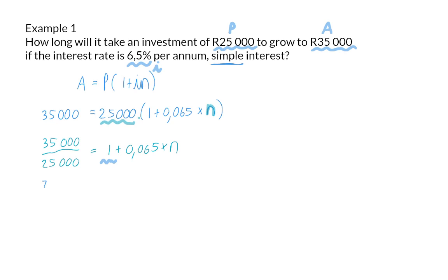Next up we then want to get rid of the plus 1 on the right so on the left we have the simplified 7 over 5 and now I'm going to subtract 1 on the left hand side. On the right hand side we are left with 0.065 times N. So finally to get rid of the 0.065 I'm going to take the value on the left and divide it by 0.065.